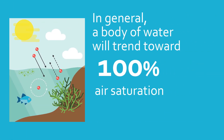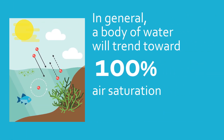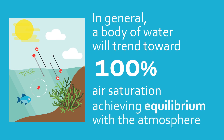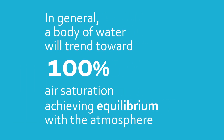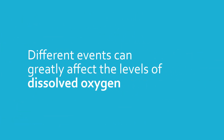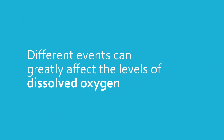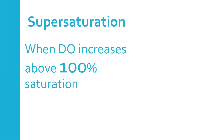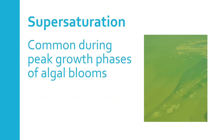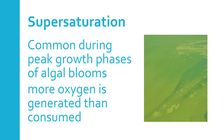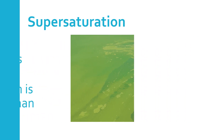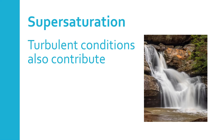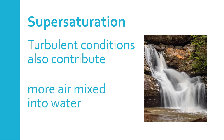In general, a body of water will trend toward 100% air saturation, achieving equilibrium with the atmosphere. This is key to a healthy system. However, different events can greatly affect the levels of dissolved oxygen. Supersaturation happens when DO increases above 100%. This type of imbalance is common during peak growth phases of algal blooms where more oxygen is being generated than can be consumed. Turbulent conditions can also lead to supersaturation if more air gets mixed into the water.